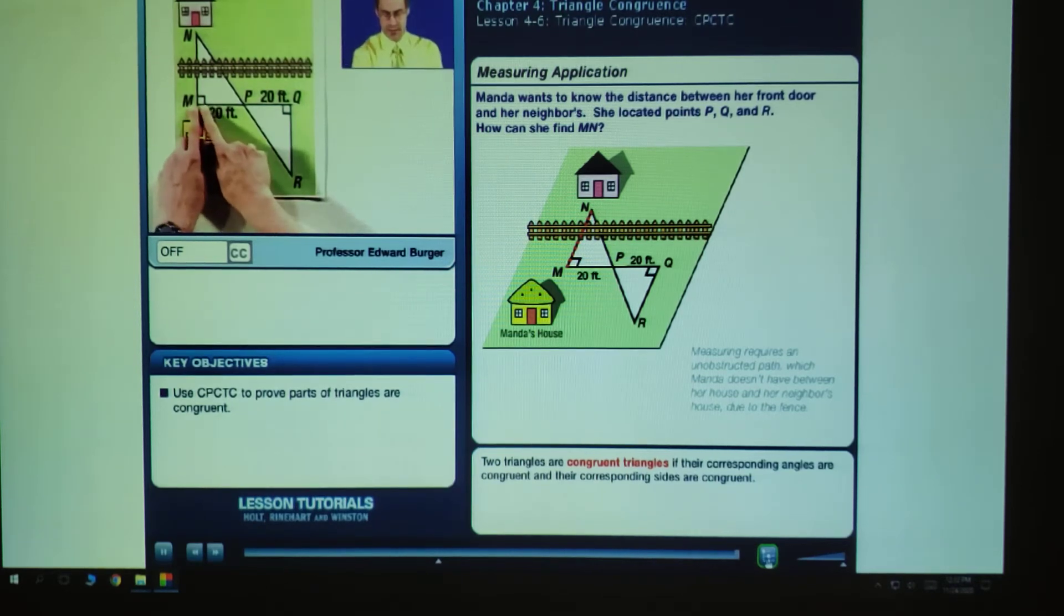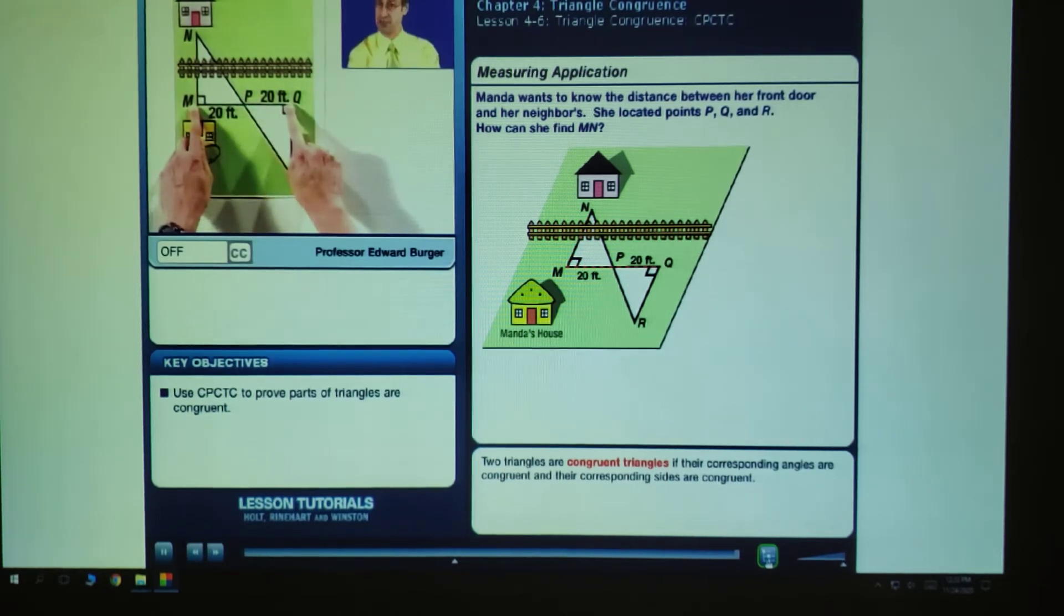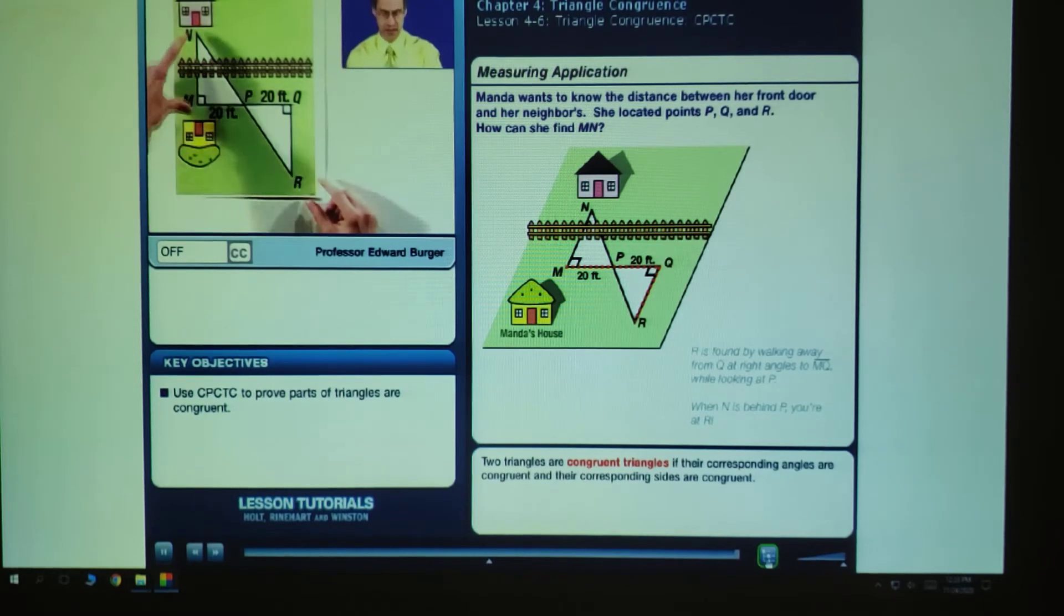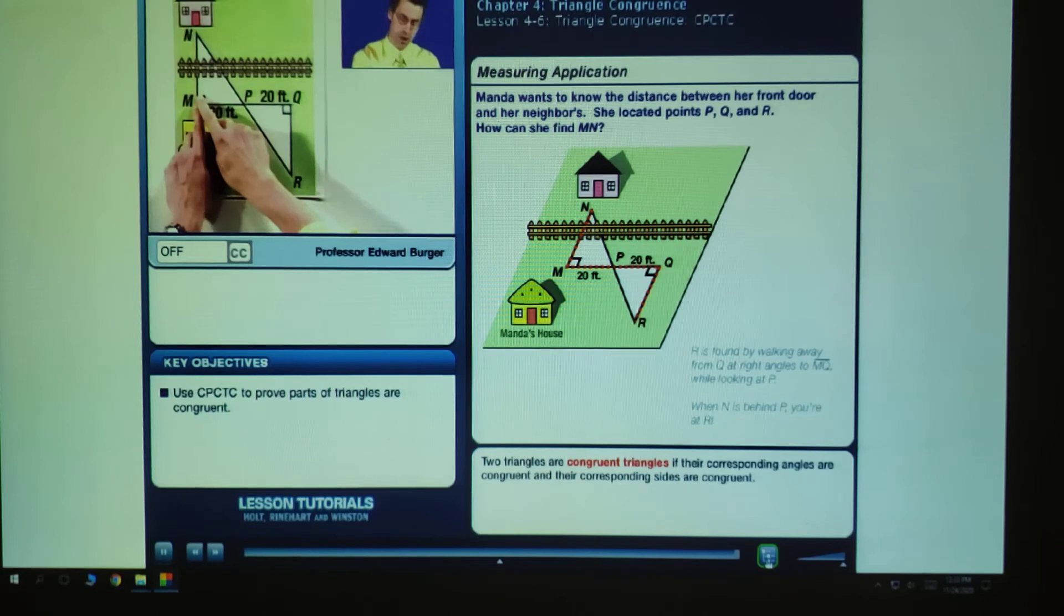She maps out this point P, this point Q, and she maps it out. This is 20 feet, and this is 20 feet. And she can measure that. There's no barrier there. She can take a measurement there. And then she puts this out here, R. And now the question is, can we find, or can Manda find, the length of this segment MN, without ever jumping over this really, really tall fence, which we know to be possible?